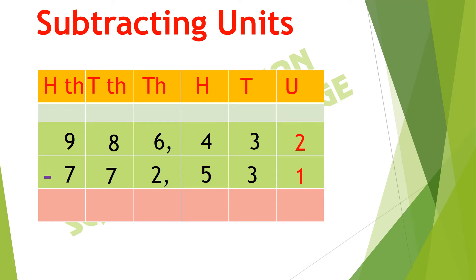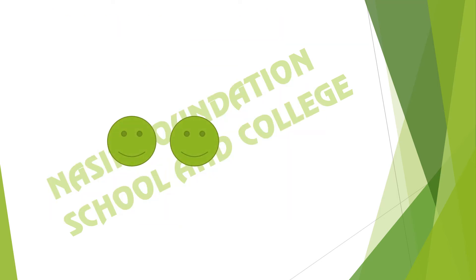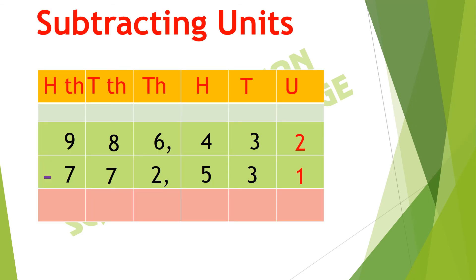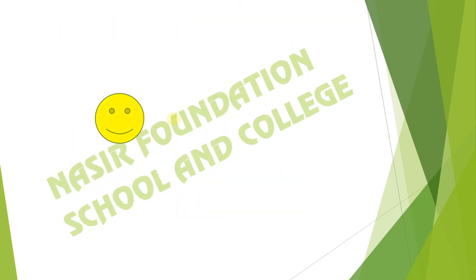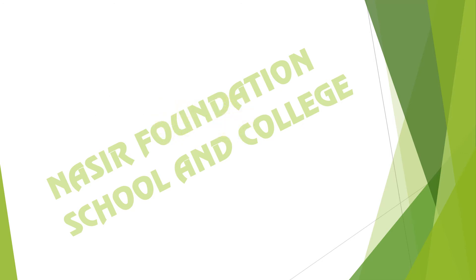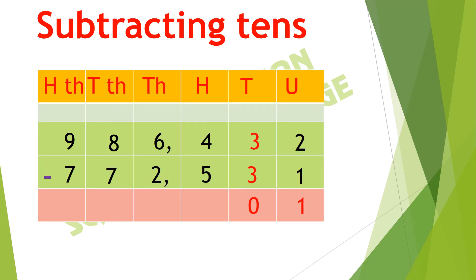First we start from the units. In units we have to subtract 1 out of 2, and here we are left with 1, so we write 1 in the units column. After subtraction of units, we move towards the tens. In tens we have to subtract 3 out of 3, and here we are left with 0, so we write 0 in the tens column.